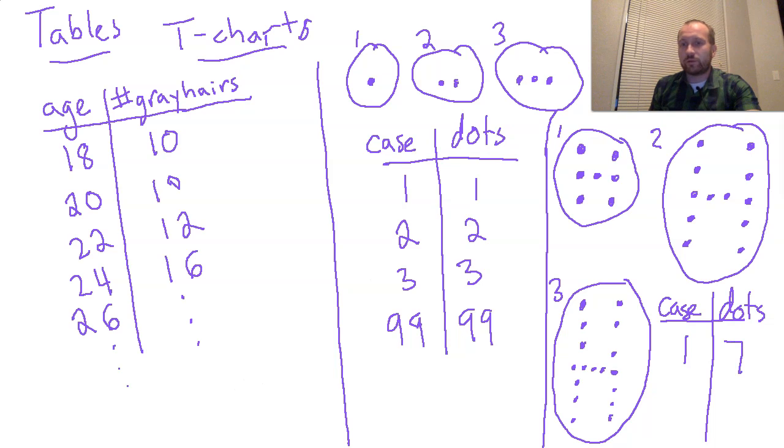Case two, I have one, two, three, four, five, six, seven, eight, nine, 10, 11, 12. And then in case three over here, one, two, three, four, five, six, seven, eight, nine, 10, 11, 12, 13, 14, 15, 16, 17.